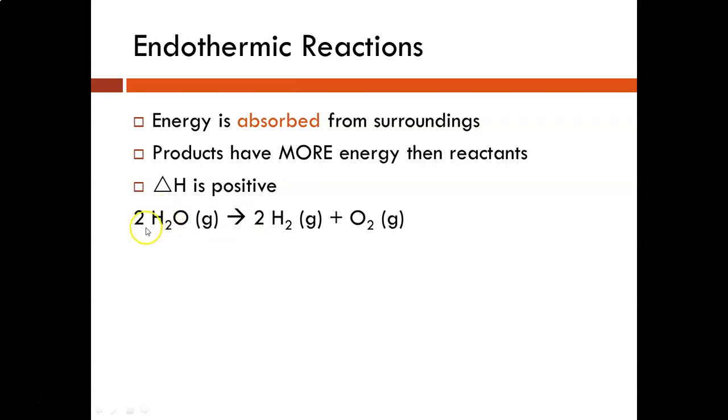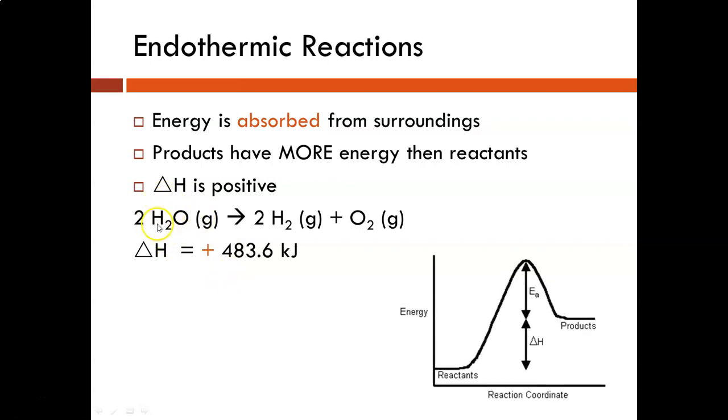If we're looking at the conversion of water in the gas phase back to hydrogen and oxygen, our delta H is a positive number. So we would write that on the reactants side because you have to add the energy in. When you think in terms of your energy coordinates and the energy of the system, in order for the reactants to make it up to the activated complex, energy has to be added in.